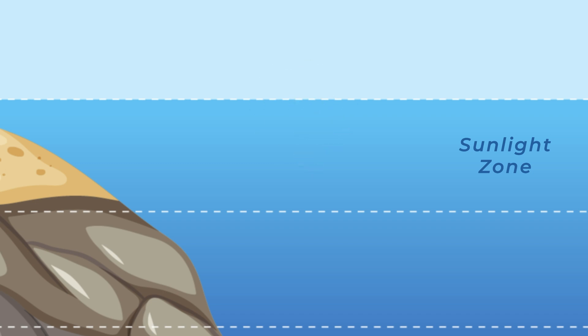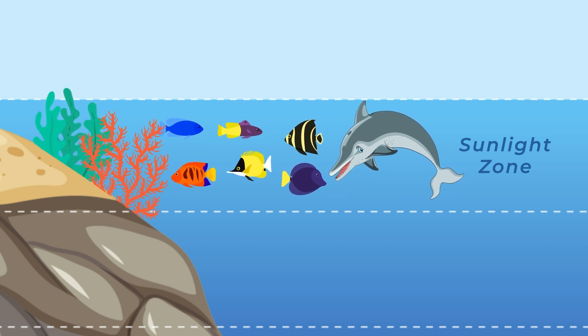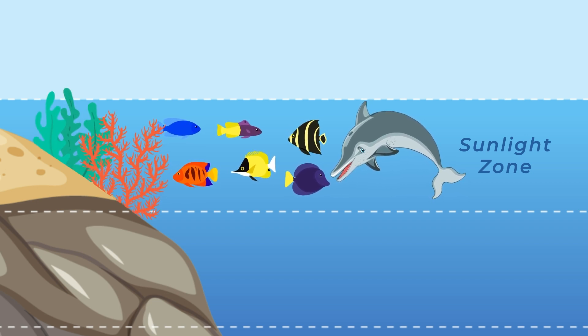The first layer of the ocean is the sunlight zone. It goes down about 200 meters. That's like two football fields deep! This is where most of the sea animals we know live, like dolphins, colorful fish, and coral reefs. There's plenty of sunlight here for plants and animals to thrive.